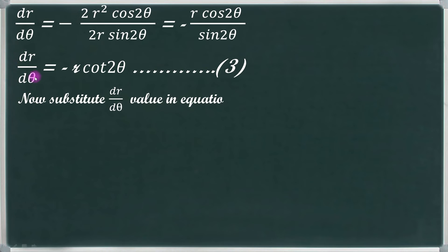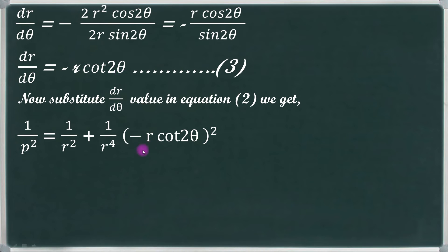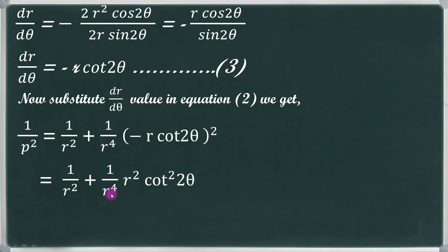Now substitute dr/dθ value into equation number 2: 1/p² = 1/r² + (1/r⁴)·(dr/dθ)². Substituting dr/dθ = −r·cot 2θ, we get 1/p² equals 1/r² plus (1/r⁴)·(−r·cot 2θ)².